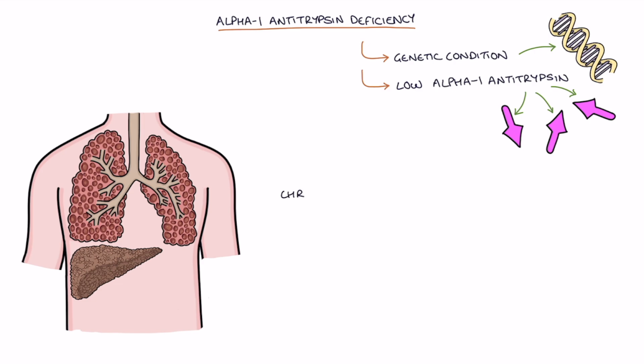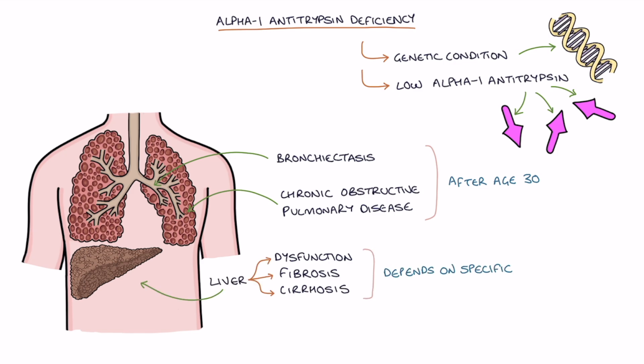They develop chronic obstructive pulmonary disease and bronchiectasis in the lungs, typically after age 30, and dysfunction, fibrosis, and cirrhosis of the liver. The presence of liver disease depends on the specific genotype, which we'll talk about in more detail shortly.